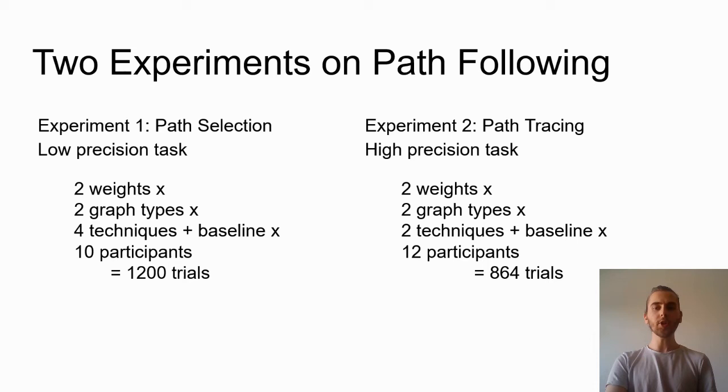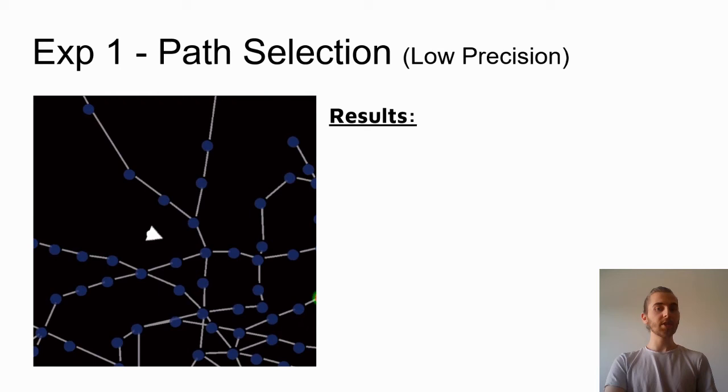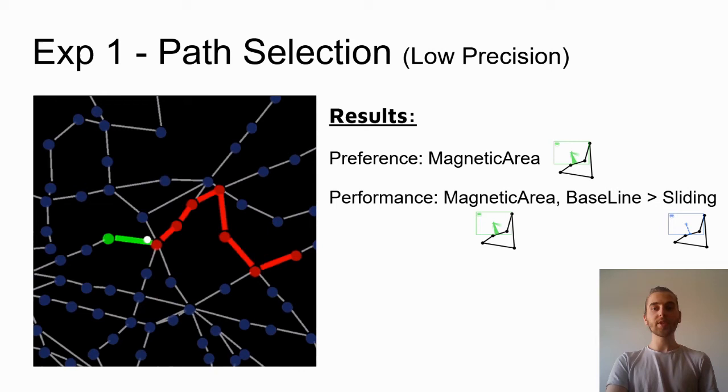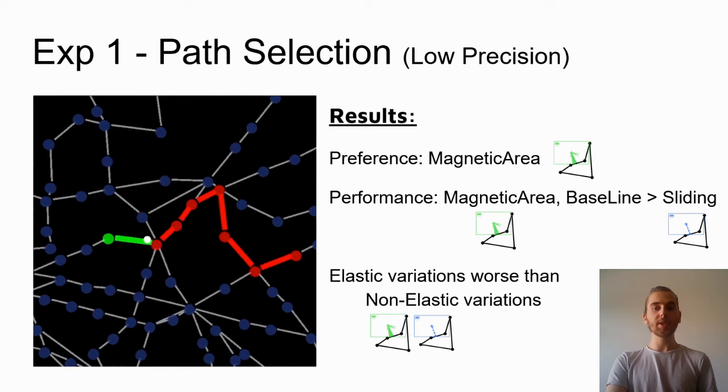So let's look at the results. For the low precision path selection task, where a participant just had to touch the links, we found that magnetic area was preferred by the participants amongst all techniques for this task. However, in performance results, magnetic area and baseline technique, a simple cursor, performed better than the others. Overall, we observed worse performance for the elastic variations, possibly from the visual clutter caused by the AR on the context by the link duplication. We thus did not include them in the second experiment.